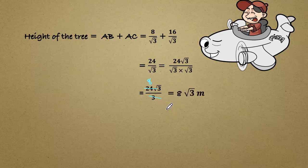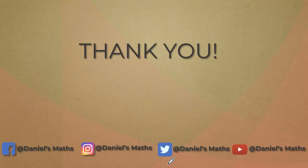So the height of the tree is 8 root 3 meter. We can substitute the value of root 3 is 1.732. So we will get the height of the tree is 13.85 meter approximately.